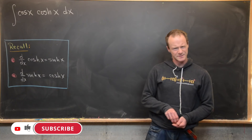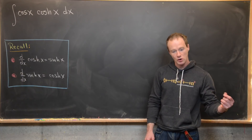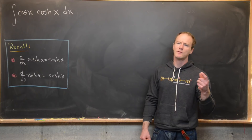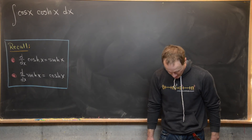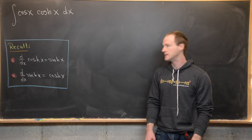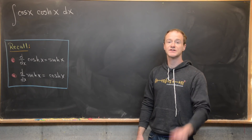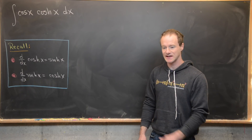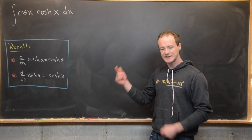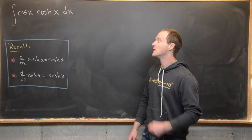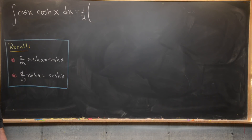Our next integral is pretty interesting in that it mixes a trigonometric function and a hyperbolic trig function — the antiderivative of cosine of x times the hyperbolic cosine of x. Let's recall that the derivative of hyperbolic cosine is hyperbolic sine, and the derivative of hyperbolic sine is hyperbolic cosine — similar to regular trig functions, but you never pick up a minus sign. Since we only have one term here, there's nothing built in initially that will cancel.